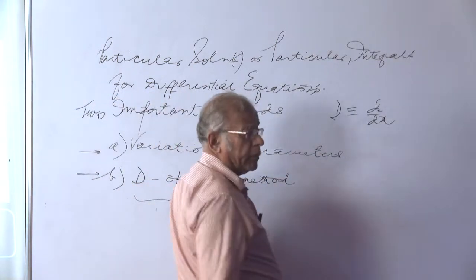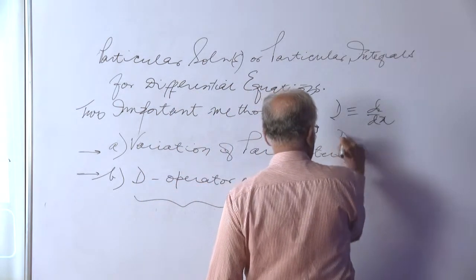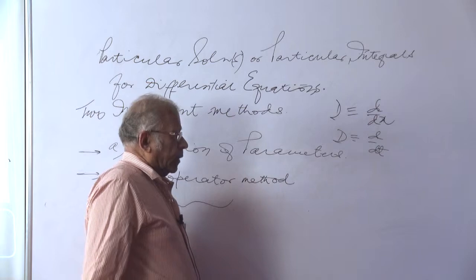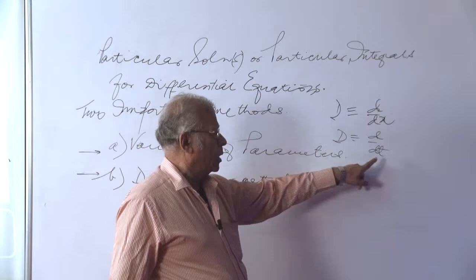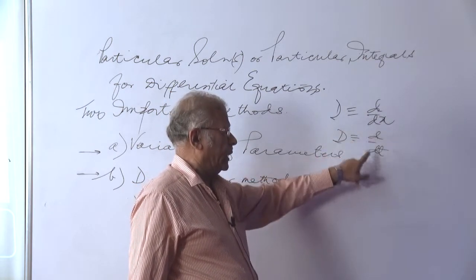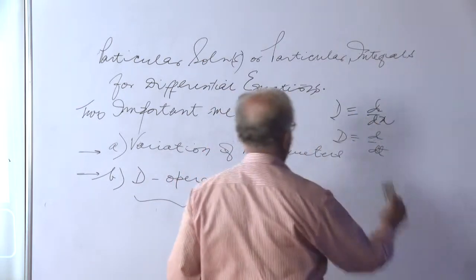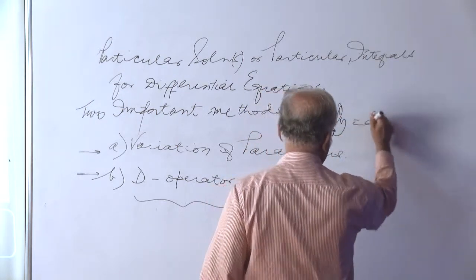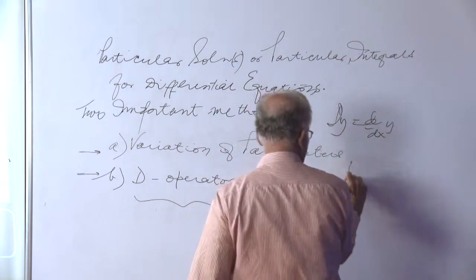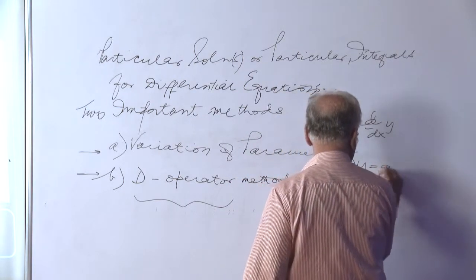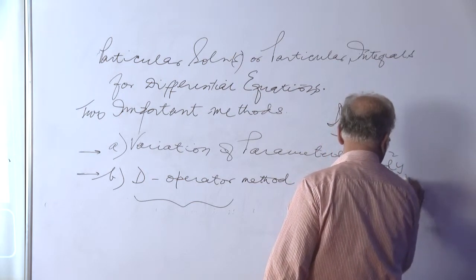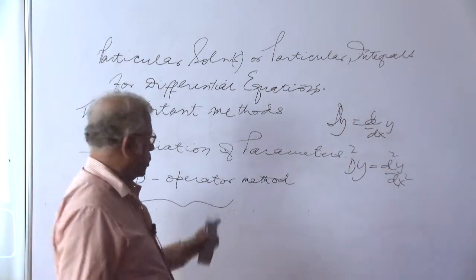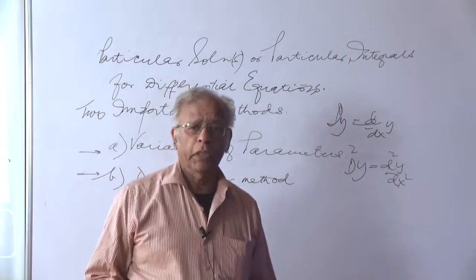Sometimes in physical problems from physics and engineering, D stands for d/dt, because in practical problems we need to find the variation of quantities with respect to time. So D operating on y is nothing but dy/dx, and D²y means d²y/dx², and so on. There is a series of formulas using the D-operator that will lead us to the particular solution, and these we will see separately.